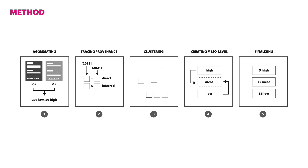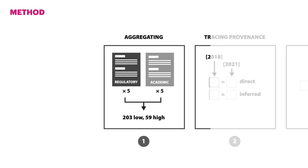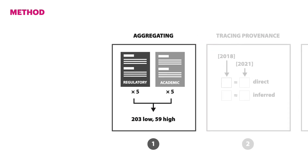Our method for developing this ontology included five key stages, moving from early aggregation of dark patterns' types to clustering and creating new informational structures, culminating in a new three-level structure. In the first stage, aggregation, we evaluated ten different sources, encompassing 203 low-level patterns and 59 high-level patterns.